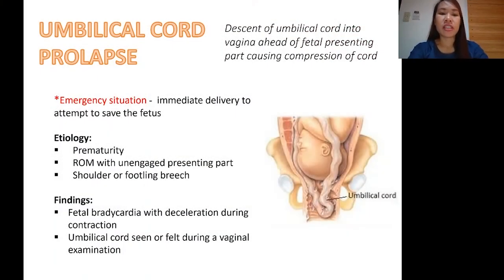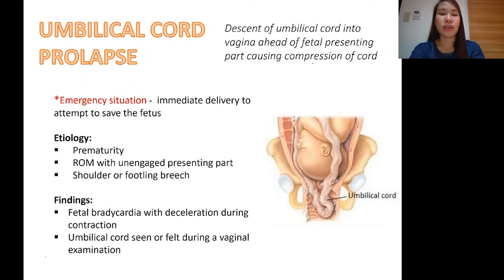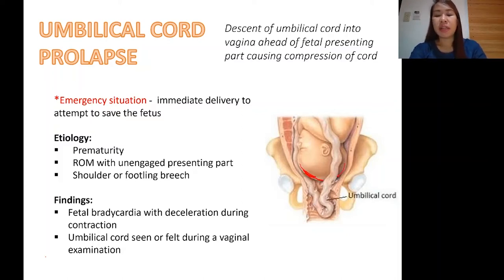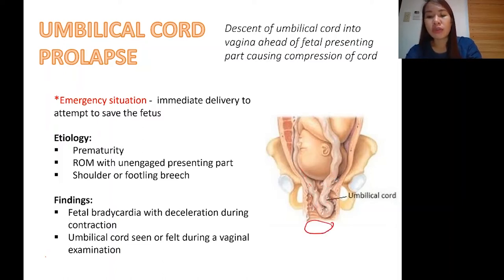At this time, we will be discussing umbilical cord prolapse. By definition, this is the descent of the umbilical cord into the vagina ahead of the fetal presenting part, which causes compression of the cord. In Tagalog, instead of the head coming out first, it is the umbilical cord that comes out first. As we can see in this picture, the head is the presenting part, but the umbilical cord has already descended into the vaginal portion.